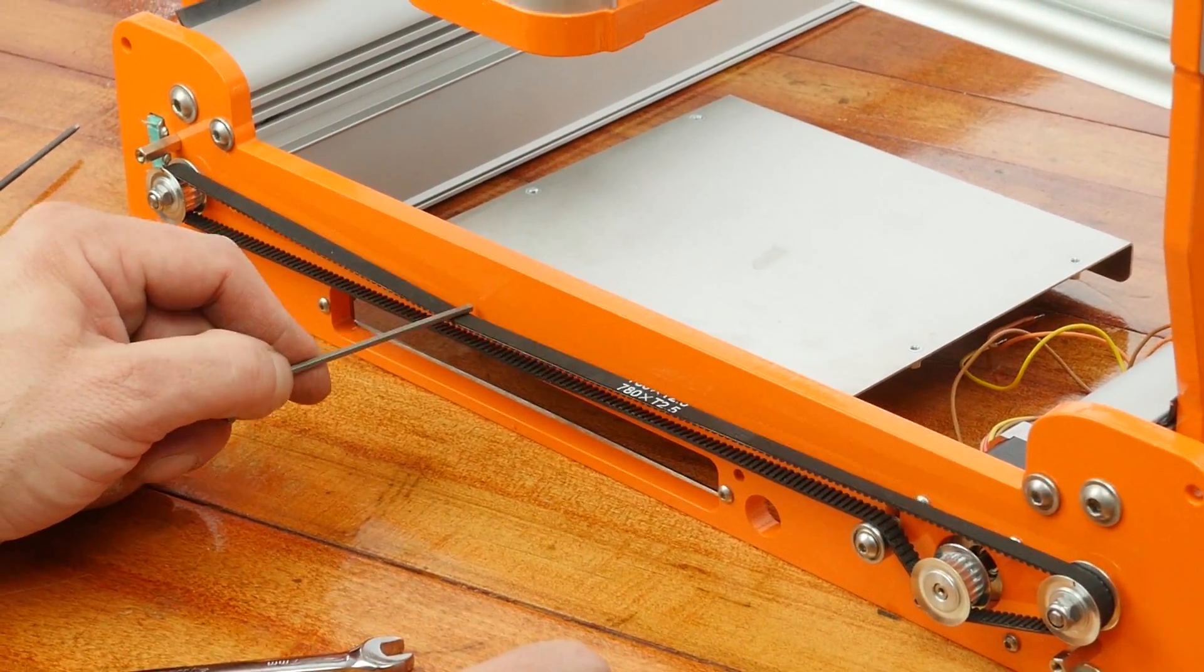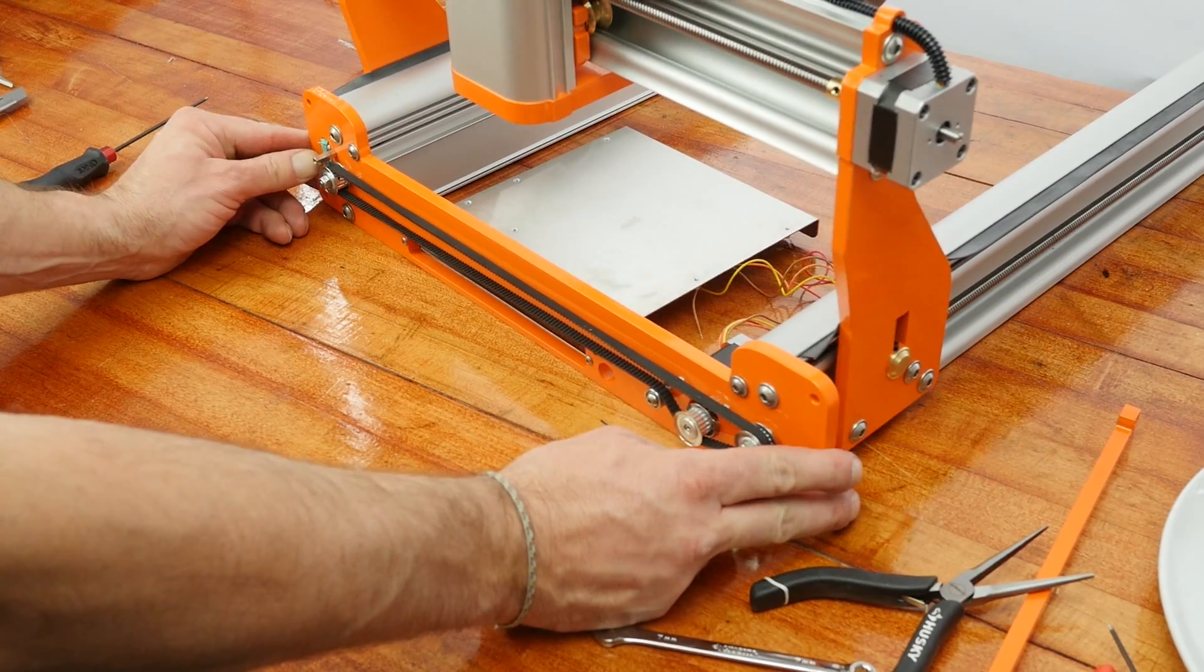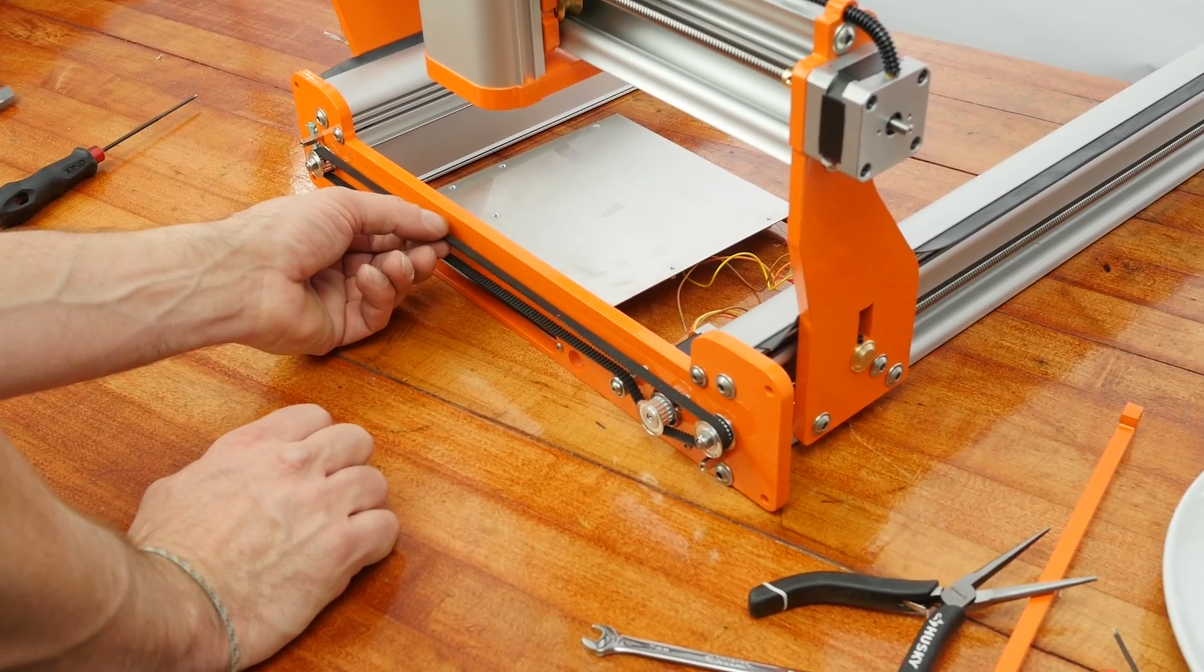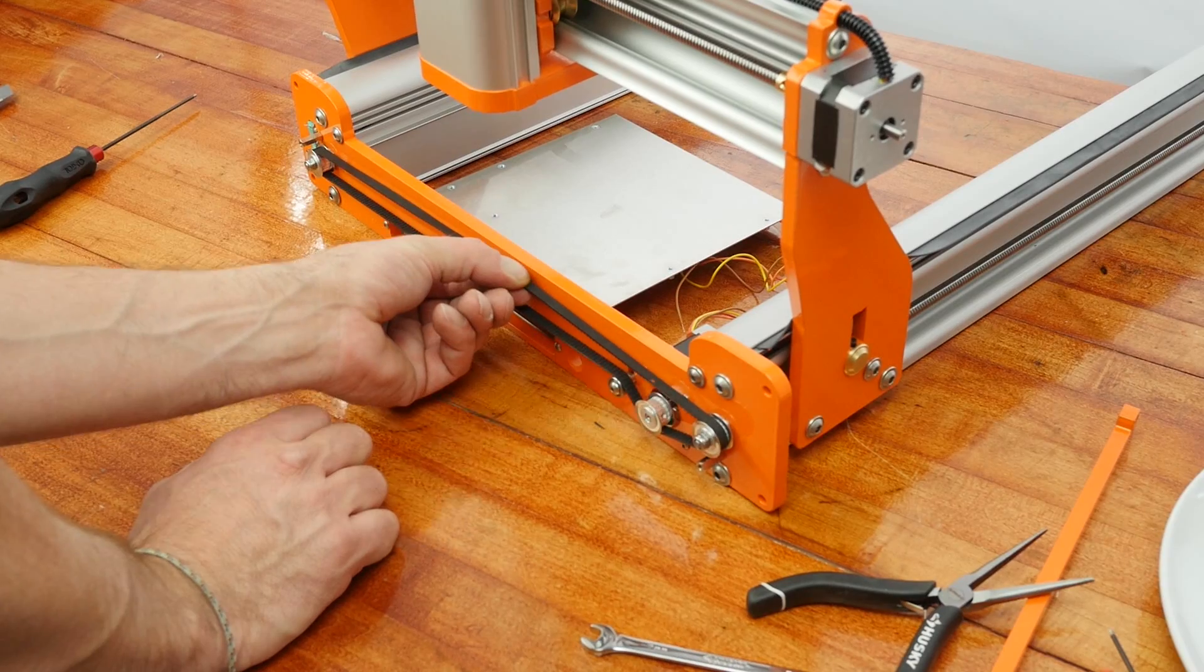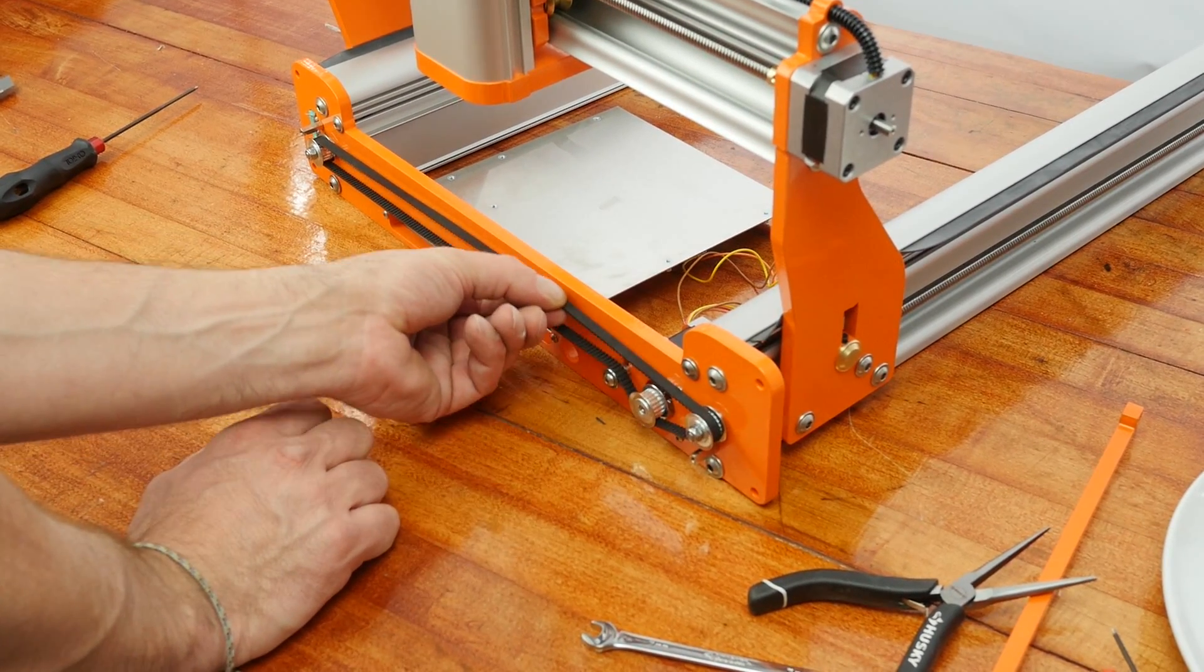There will be slight tension on the belt. Notice how the machine can easily slide on this table, yet we can operate the belt by hand and the machine remains stable.